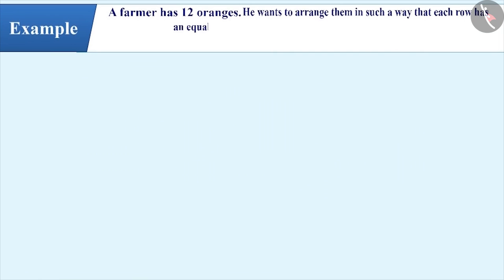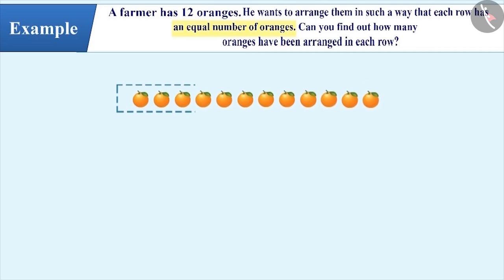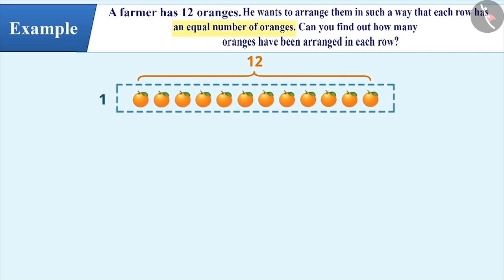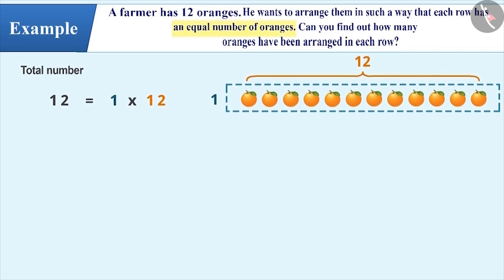Example: A farmer has 12 oranges. He wants to arrange them in such a way that each row has an equal number of oranges. The farmer can keep all the oranges in one row. This arrangement is expressed mathematically as 12 equals 1 multiplied by 12, where 1 represents the number of rows and 12 represents the number of oranges in a row.